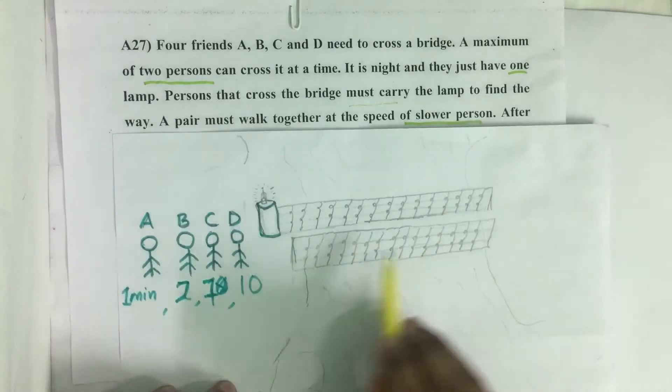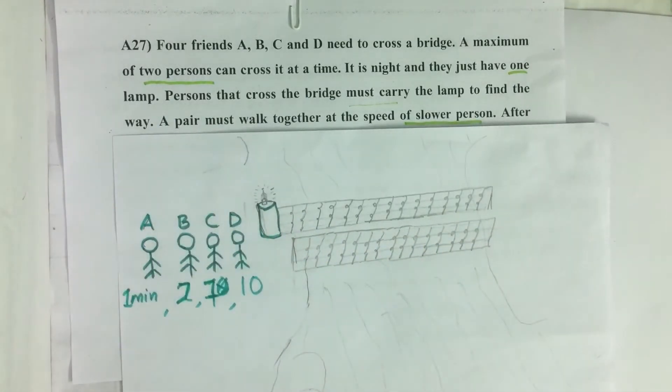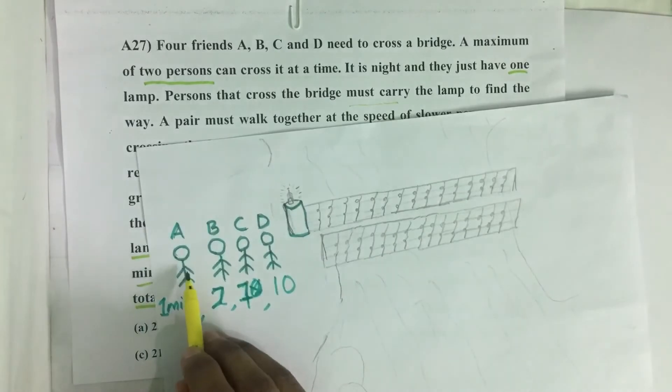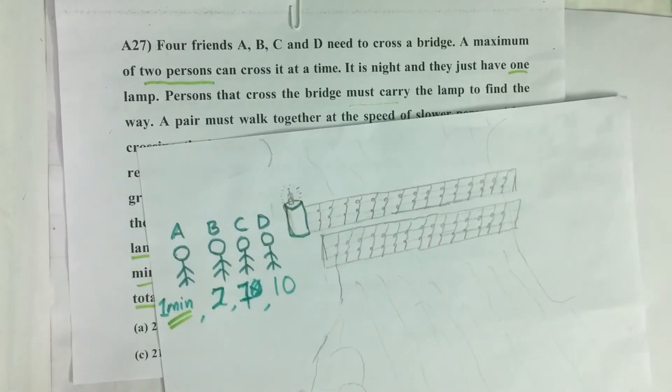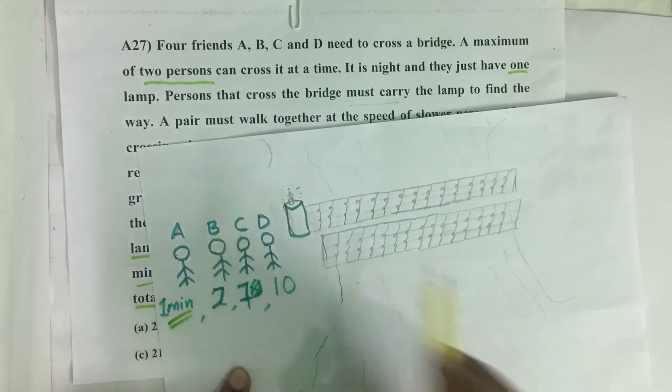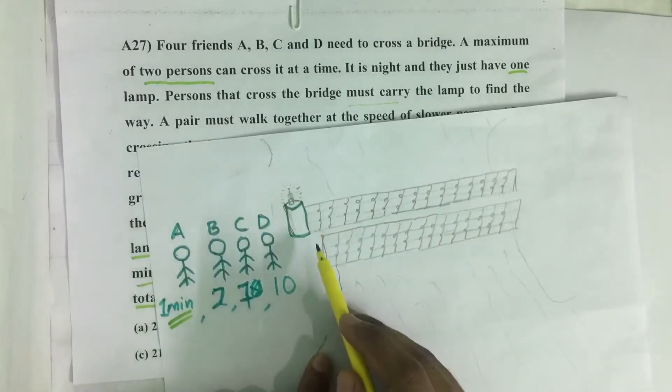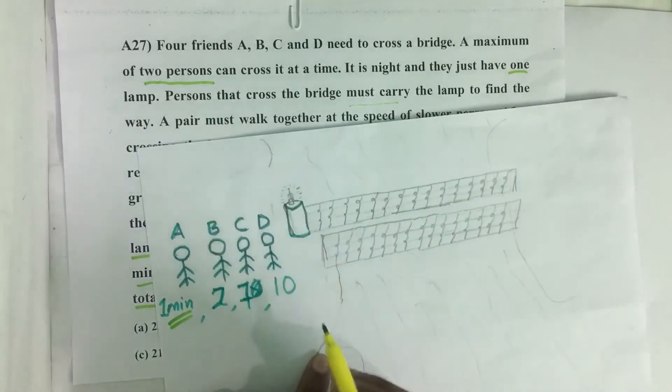Here the four friends have to cross this bridge. There is only one lamp and they have to go in pairs. A is the fastest, he can cross the bridge in one minute, so all the time A will accompany his friends and finally he returns the lamp and walks to the other side without lamp. That is how we solve this question.